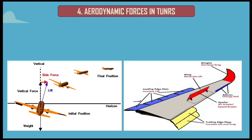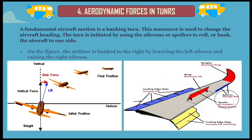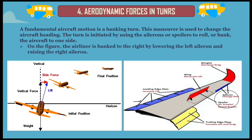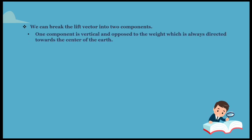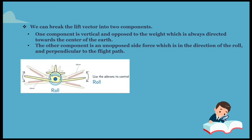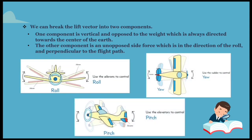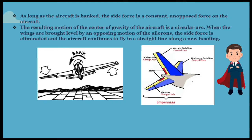Coming to the next topic: aerodynamic forces and turns. A fundamental aircraft motion is a banking turn, which is used to change the aircraft heading. The turn is initiated by using the ailerons or spoilers to roll or bank the aircraft to one side. The airliner is banked to the right by lowering the left aileron and raising the right aileron. We can break the lift vector into two components: one component is vertical and opposed to the weight, which is always directed towards the center of the earth; the other component is an unopposed side force in the direction of the roll and perpendicular to the flight path. As long as the aircraft is banked, the side force is a constant unopposed force, and the resulting motion of the center of gravity is a circular arc.